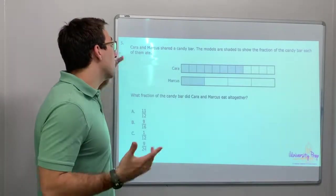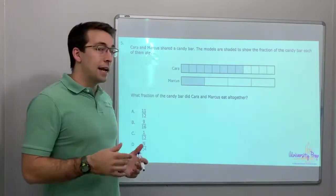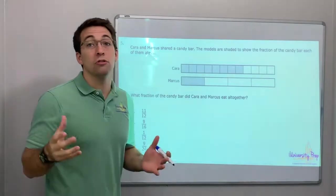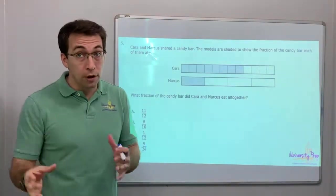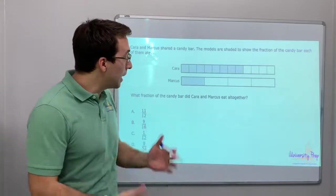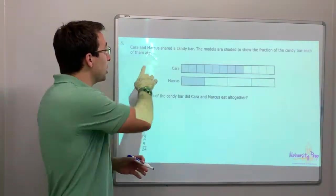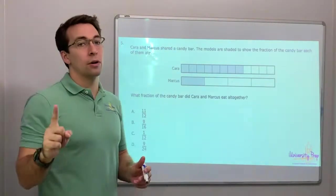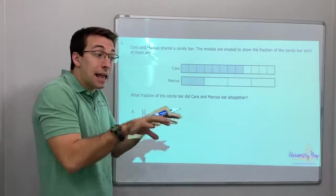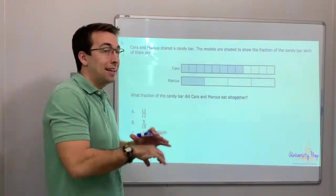Kara and Marcus shared a candy bar. The models are shown to show the fraction of the candy bar that each of them ate. They shared one candy bar, so each of them ate less than one.